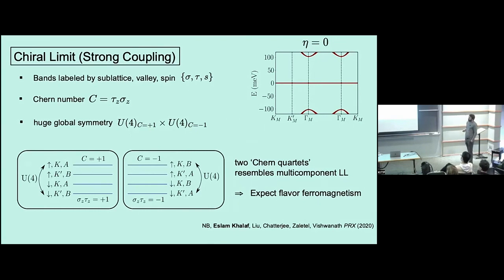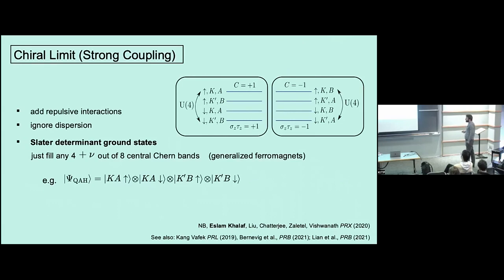People familiar with quantum Hall ferromagnetism will recognize this situation: exactly flat bands with a Chern number and a continuous symmetry. We expect that at integer fillings we will flavor-polarize and get ferromagnetism. Indeed, it turns out that at integer fillings the ground states are exact Slater determinants — for example, at half-filling you just pick any four of these bands, completely fill them, and that will be an exact ground state and also an insulator. Most choices of four out of eight bands give a state that spontaneously breaks the U(4) × U(4) symmetry — it really is a ferromagnet.